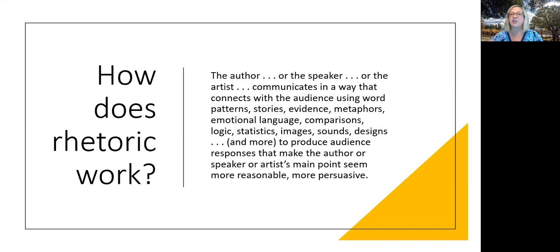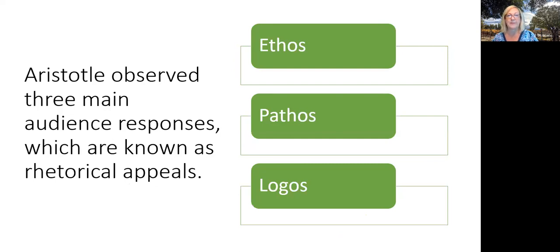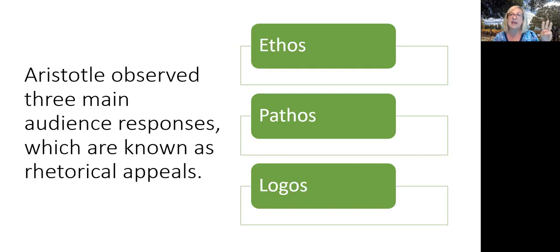As many strategies as you can think of — things that you actually do to connect with an audience — you can get the audience to respond in ways that they go, hmm, maybe she's right, or maybe that idea makes sense to me. Now, Aristotle observed that there were three main audience responses, and these are known as rhetorical appeals — not to be confused with rhetorical strategies, but we'll get to that on another day. The three main audience responses are ethos, pathos, and logos.